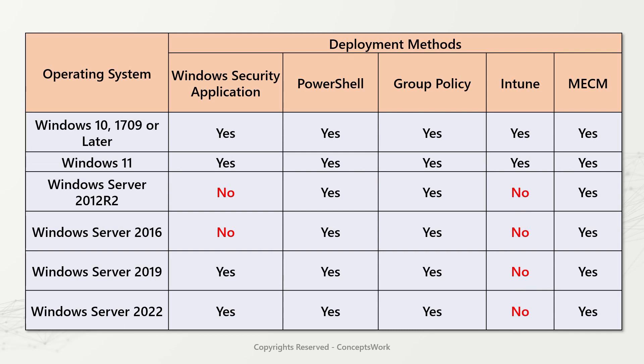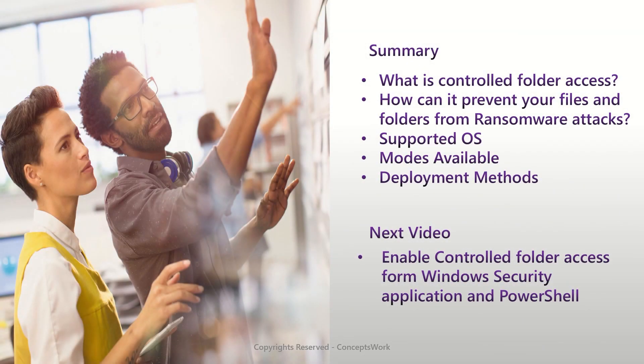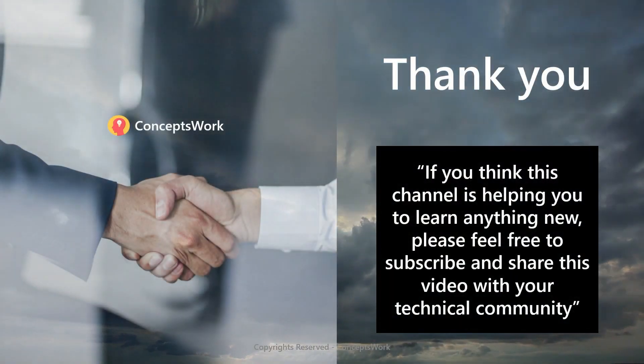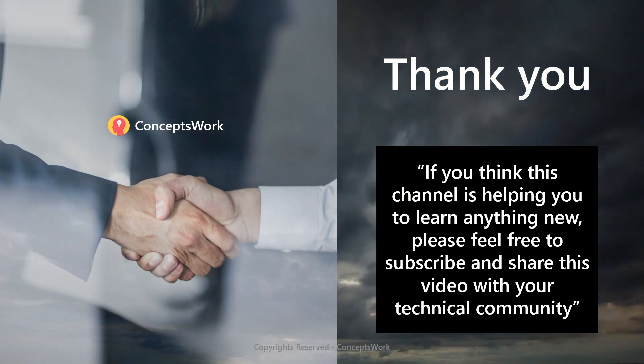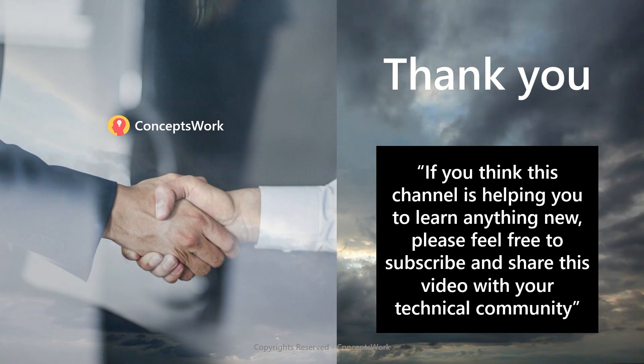Let's do a quick summary of what we have discussed: what is controlled folder access, how exactly it works, how it can prevent your data from getting encrypted by ransomware, what modes are available, and what deployment methods exist. In the next video, I'm going to show how you can enable the setting from Windows Security application and PowerShell, and practically cover each test use case using a test tool available from Microsoft.